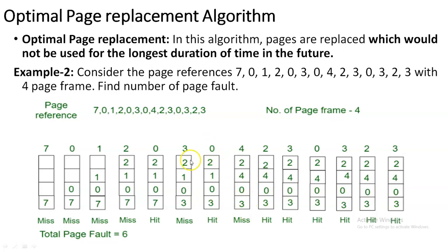The next string is 0 — zero already exists, so it is a hit. The next string is 4 — four does not exist, so it is a miss. We check which page to replace: two cannot be replaced because two appears right after four in the future string. Zero and three are also coming up. The only page not appearing after four is one, so we replace page 1 with page 4. After this, all remaining strings are hits because they are all present inside the frame.